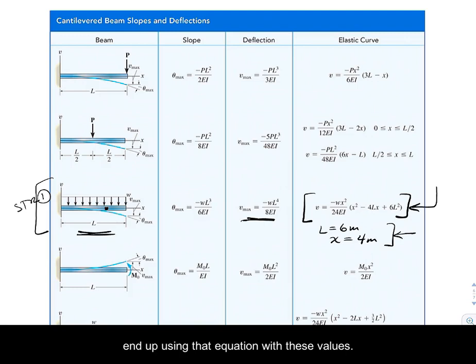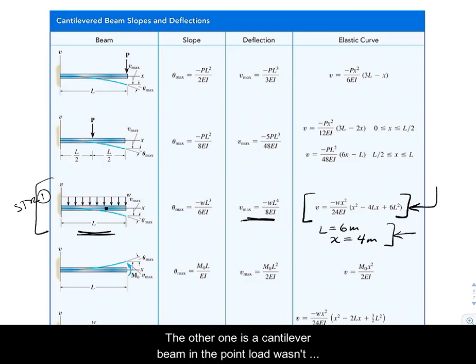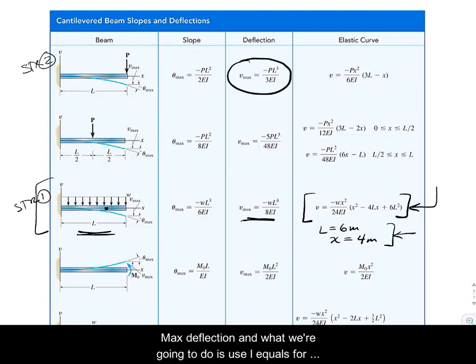So we will end up using that equation with these values in it. The other one is a cantilevered beam, right, and the point load wasn't at the end of the beam, but what we can do is use this picture for structure two.